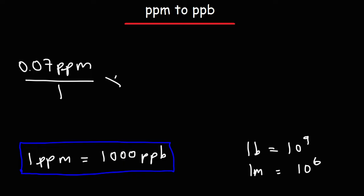So we just got to follow the same pattern. We're going to multiply it by 1,000 ppb per 1 ppm. So 0.07 times 1,000, you simply need to move the decimal point three units to the right. And this is going to give you 70 parts per billion.